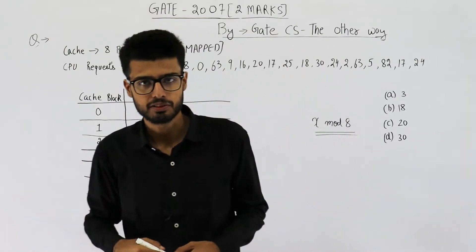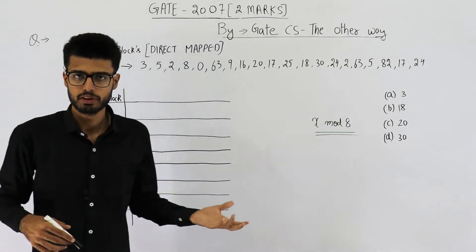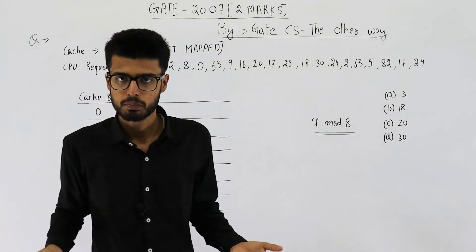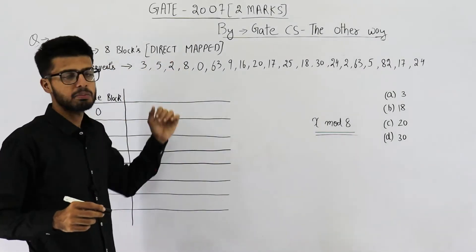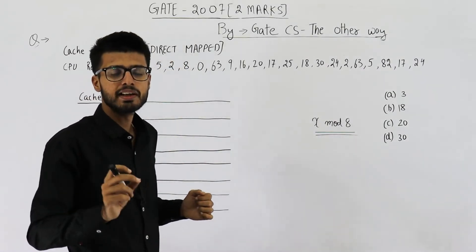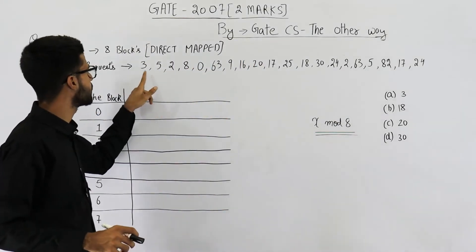Okay. Also, they haven't mentioned anything about the replacement policy, whether you'll be using LRU or optimal or what. Okay. The thing is, it's direct mapped cache. You don't need any replacement policy.